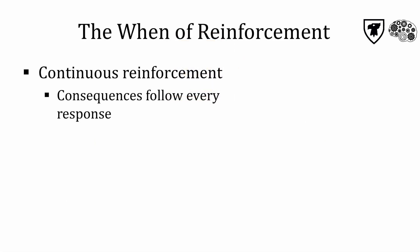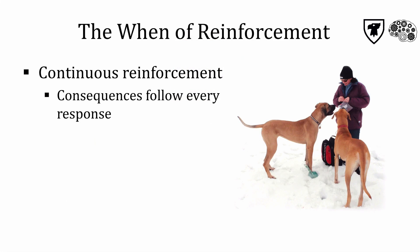When reinforcement follows every response, such as giving a dog a biscuit every time he sits, it's called continuous reinforcement. With continuous reinforcement, the individual expects to get something for every response, and therefore this is the most predictable schedule and tends to have a strong influence on behavior.